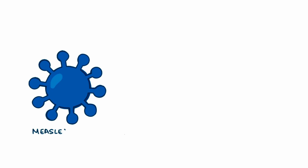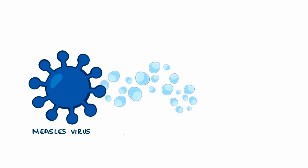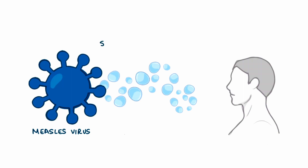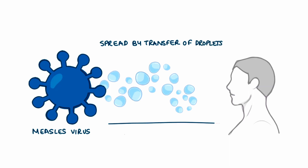Measles is caused by the measles virus and can spread via very small droplets, making it highly contagious. So if an infected individual coughs or sneezes, they can spread these droplets which can then be carried to the next individual. If this individual is not immune — i.e. not vaccinated — the measles virus can then infect the epithelial cells of the nose and the eyes.